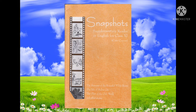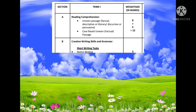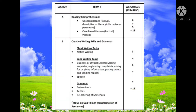Let's move on with the term-wise syllabus. For term 1, you have three sections. Section A includes reading comprehension — there will be two unseen passages. The first one is an unseen passage; it may be factual, descriptive, literary, discursive, or persuasive. The second one is a case-based unseen passage. The first passage carries 8 marks, the second carries 5 marks, and the total weightage for reading comprehension is 13 marks.